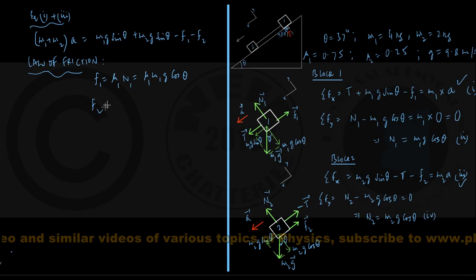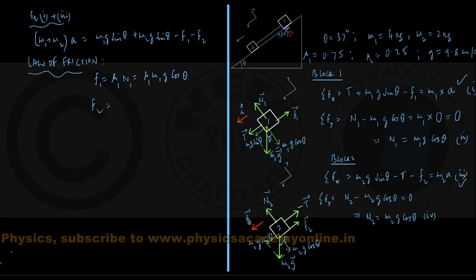And similarly, the frictional force f2 acting on block number 2 is given by mu2 into n2. So, this is mu2 into n2.